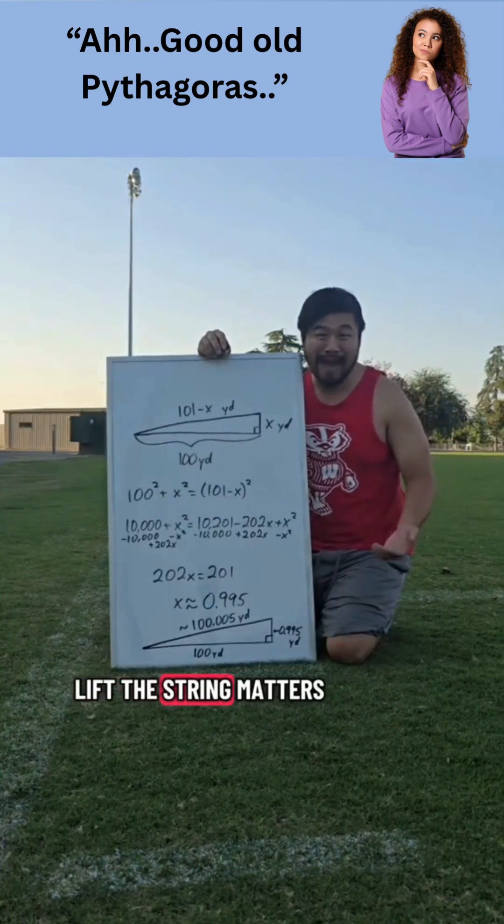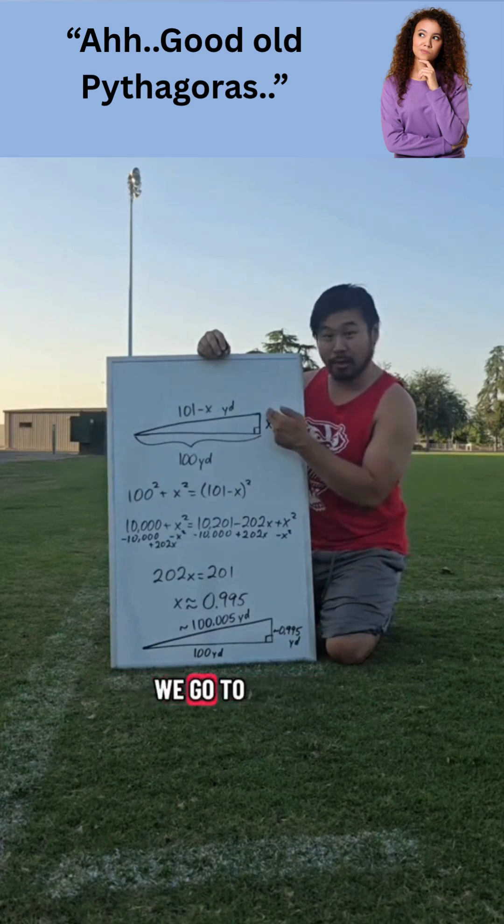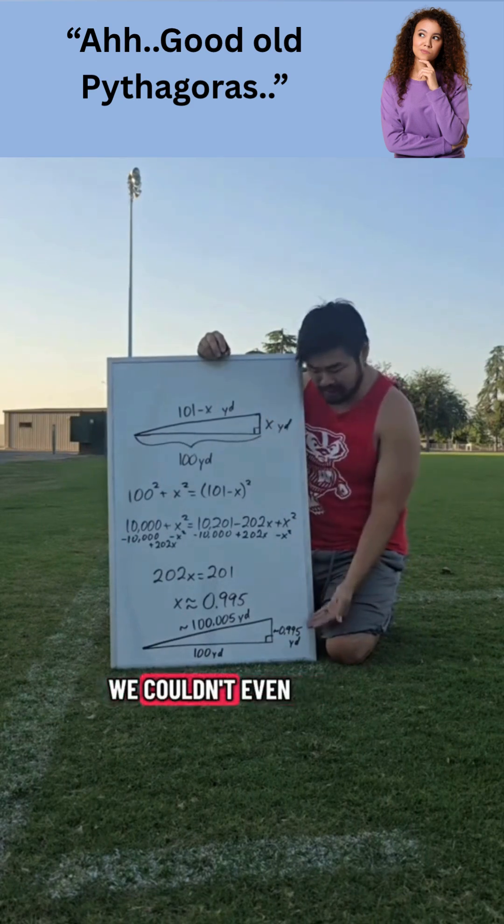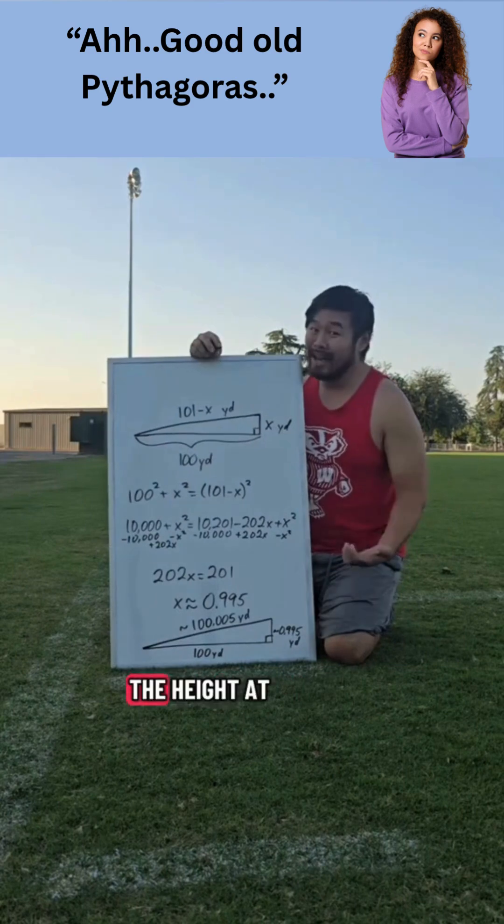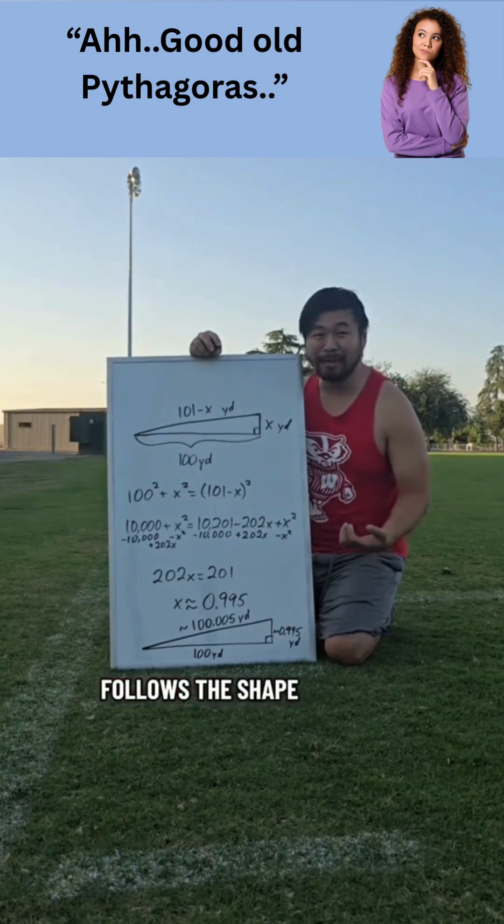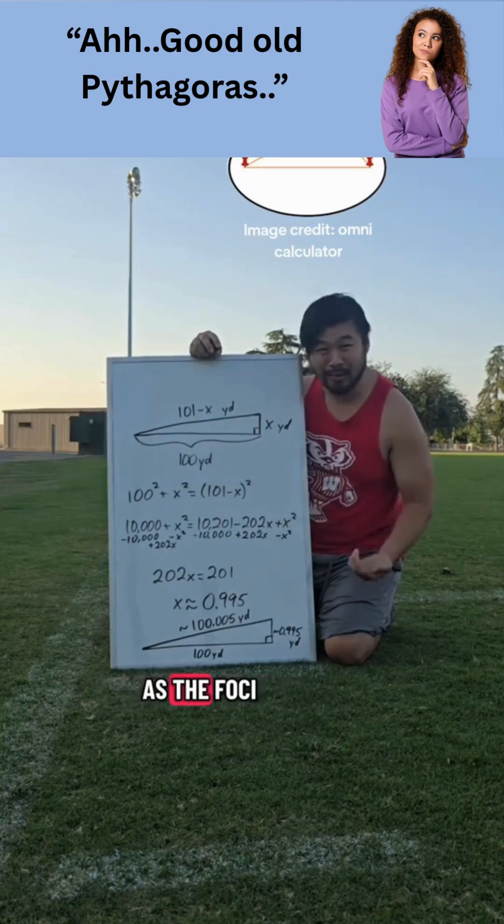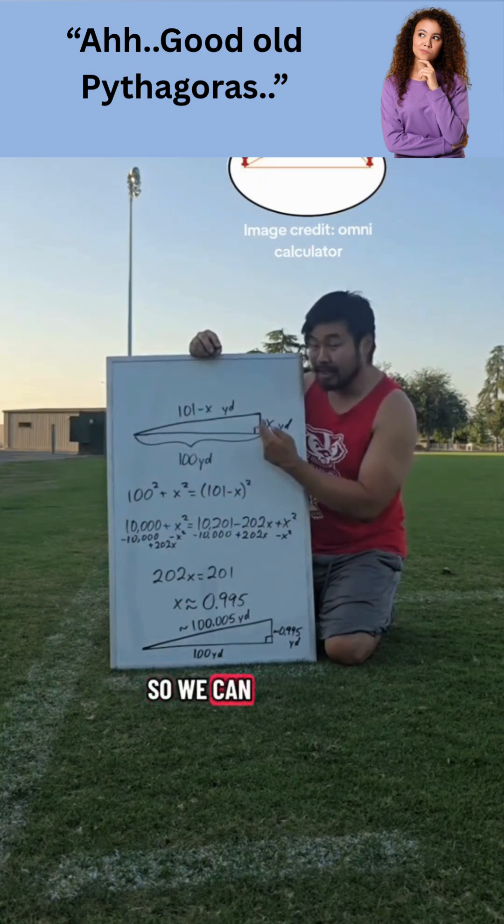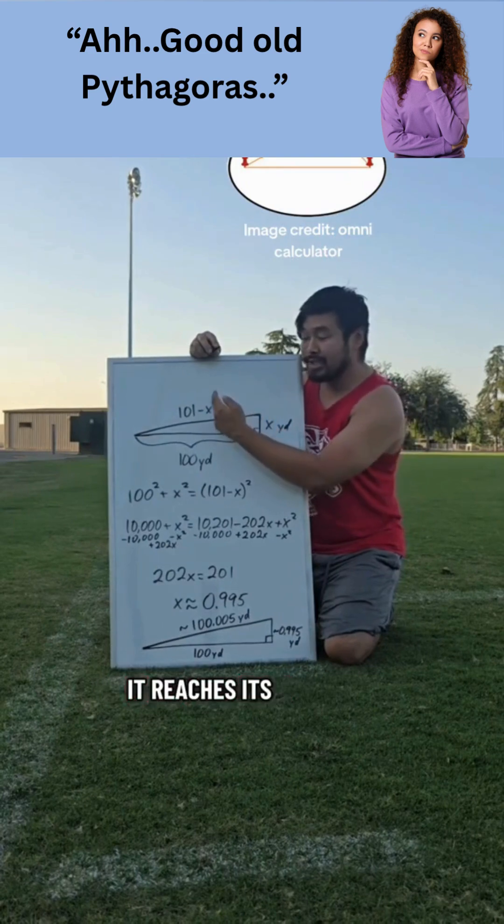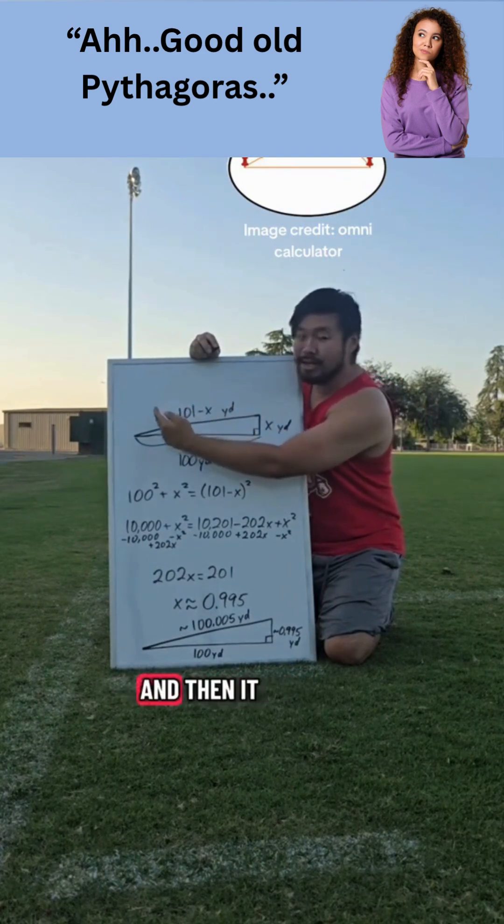Now where we lift the string matters. For example, if we go to the goal line and lift the string, we couldn't even lift it a yard. The height at which we can lift the string follows the shape of an ellipse, because we can think about these pinned points on the goal lines as the foci. So we can barely lift the string over here, it reaches its maximum at the 50-yard line, and then it goes back down.